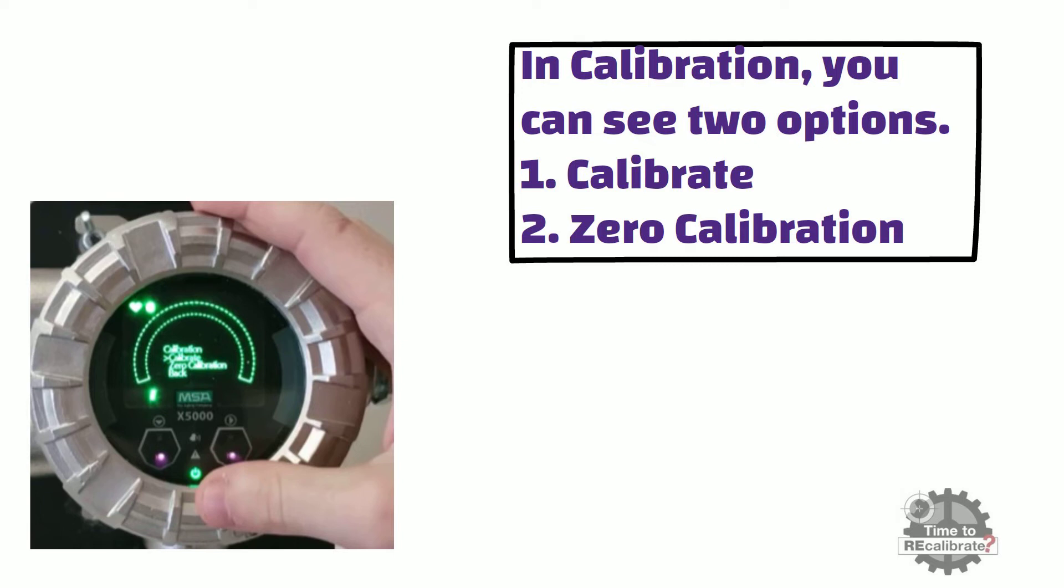If you want to do only zero calibration, select zero calibration option by pressing the left hand side button twice, and press the right hand side button to start calibration.